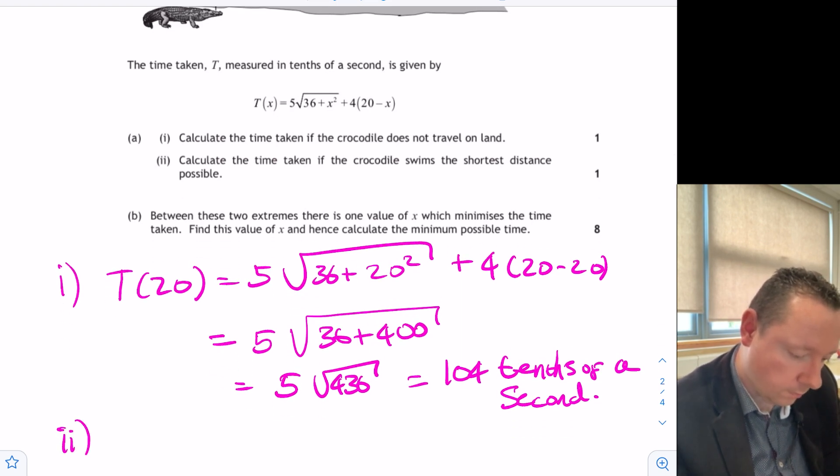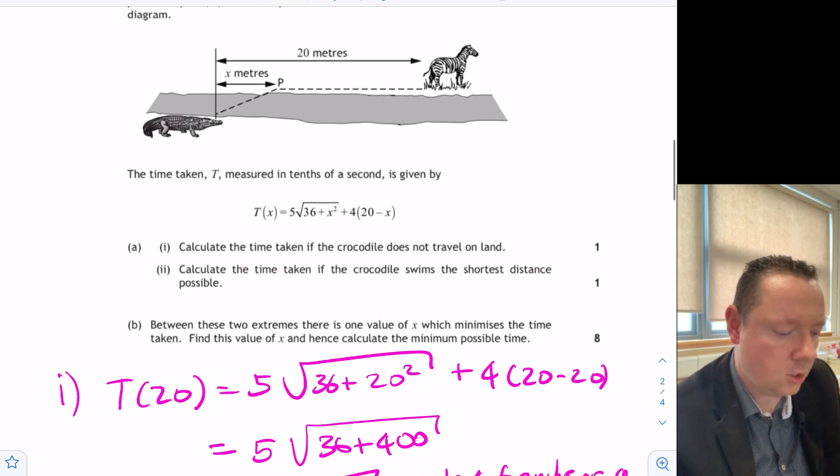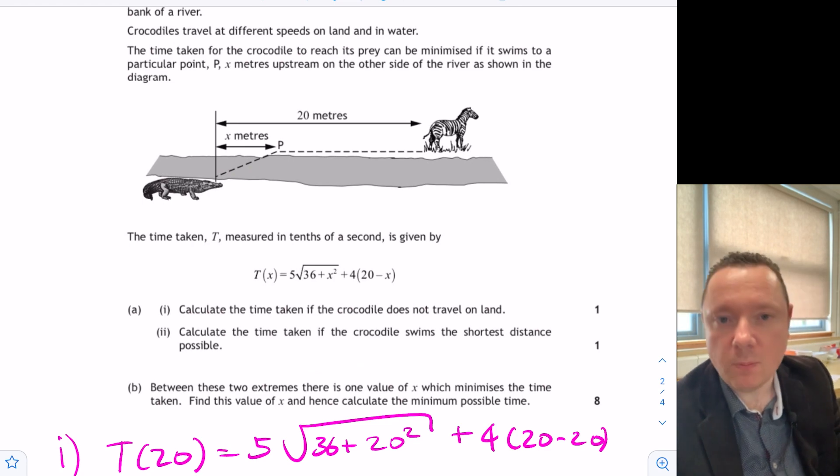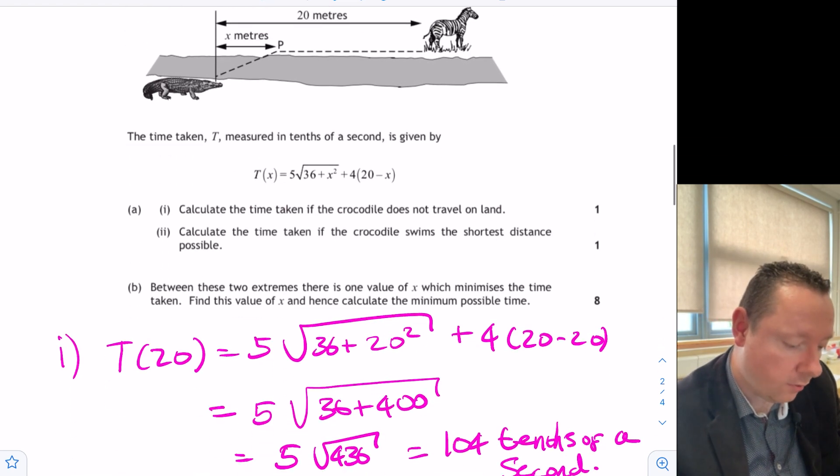Now let's look at part two. Calculate the time taken if the crocodile swims the shortest distance possible. Well let's have a look at this picture again. Swim's the shortest distance. Well a straight line is going to be the shortest distance. So if he just jumps straight up here and then walks the rest of the way he must be walking 20 meters. So that means that he spends no time in the water. Because remember x is how far you swim basically upstream. So he's not swimming anything upstream. He just went straight across and he's went 20 meters on land.